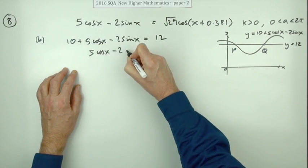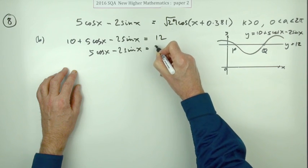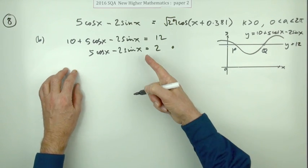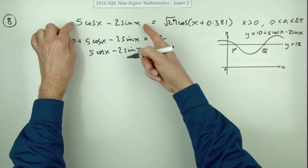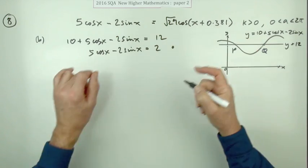5 cos x minus 2 sine x equals 2. That gets you the first mark. Then the next mark is realizing - wait, that's just that - so you could replace it with this.